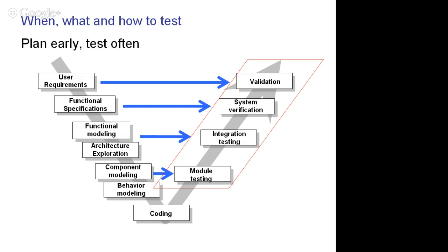Let's go back for a second to the B-cycle. The B-cycle — the left side is refinement and development, the right side is verification and testing. We said the other day that the blue lines mean that tests should be planned early in the development, whenever you do the functional specifications where you define the task for the system. So you plan while you are refining on the left side, and then you execute when you go back on the right side.